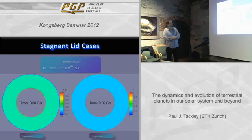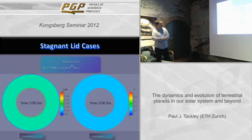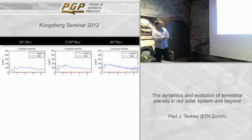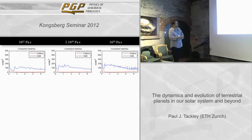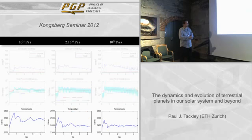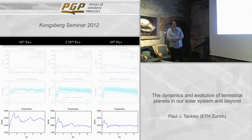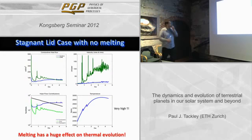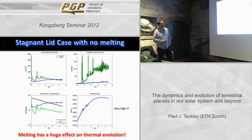The crust reaches an equilibrium thickness where there's a balance between magmatic resurfacing and delamination by convection. When plotting the heat budget versus time, the total heat transport is basically overlaid by the line showing magmatic heat transport — so almost all of the heat transport in these Venus stagnant-lid cases is magmatic, except near the end where normal conduction can win. Melting is very important; if we don't have melting switched on, temperatures get really high and the planet can't lose heat.